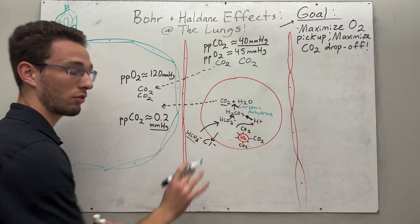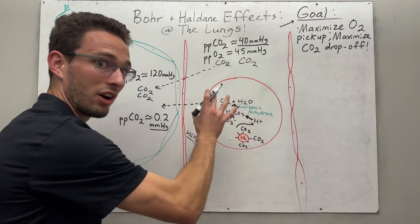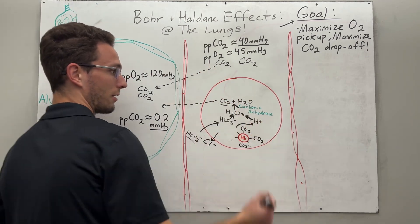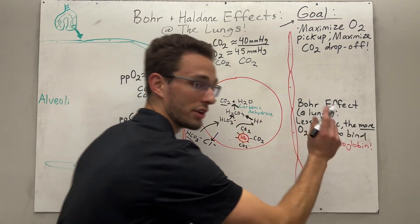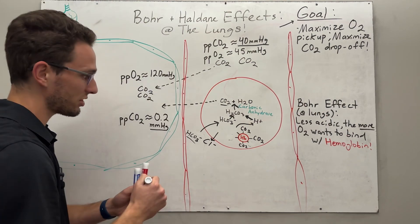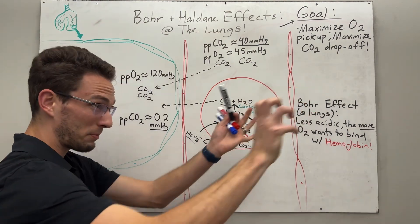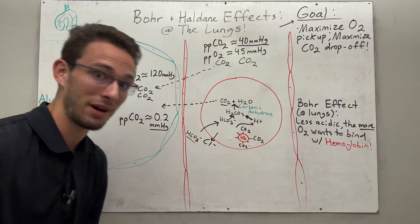It wants to bind to our hemoglobin again, because now it's free. So I want you to write what the Bohr effect is at the lung tissue here. So since we have less hydrogen ions, less acid, the more oxygen will want to bind to hemoglobin. So we're basically making these available receptors from the hemoglobin to come and grab oxygen.